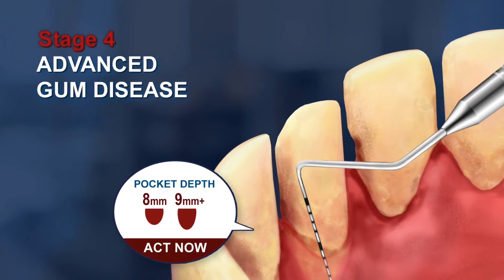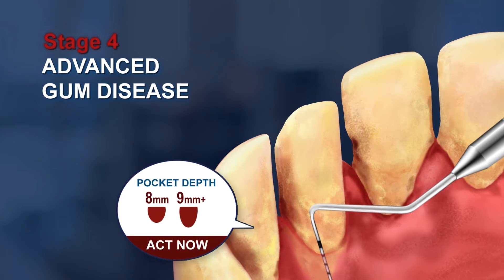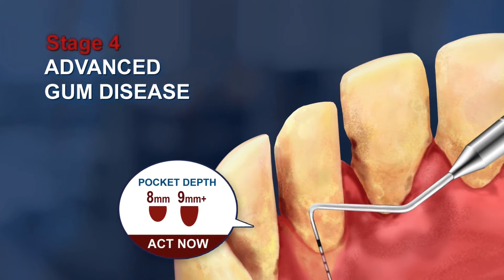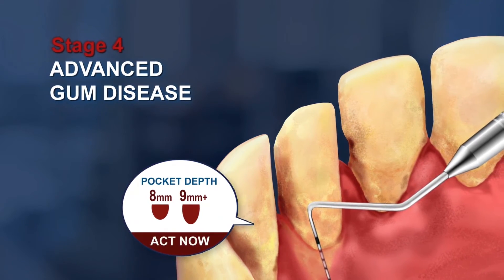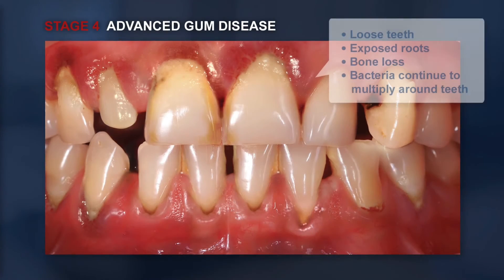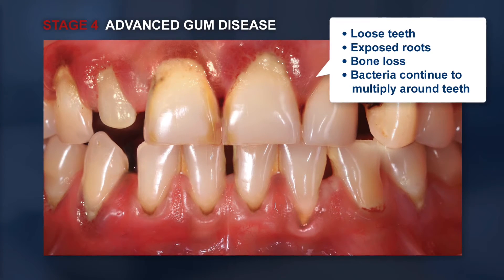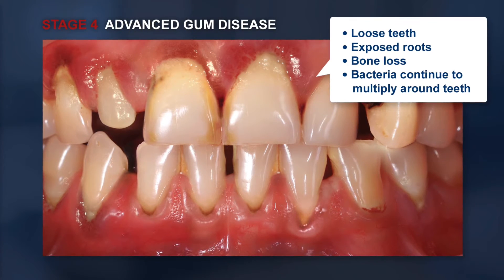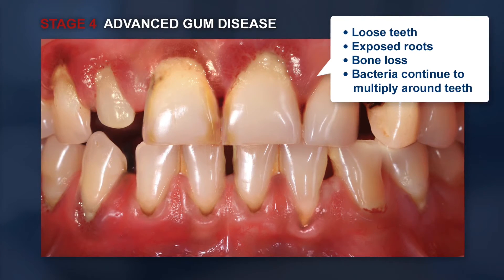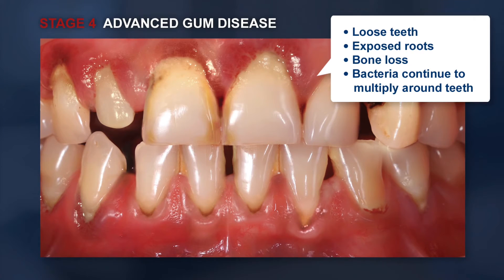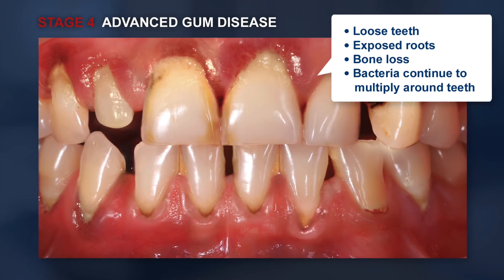As gum disease advances to stage 4, pocket depths increase to 8 to 9 millimeters or more, and further deterioration of teeth and surrounding bone occurs. Teeth will become loose and roots will become exposed as further bone is lost.